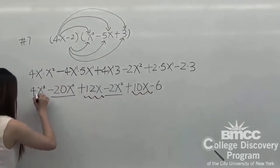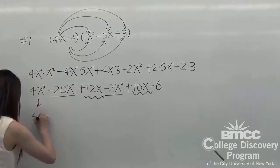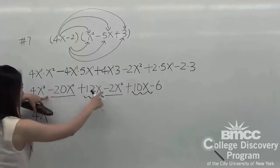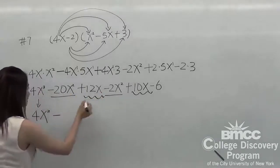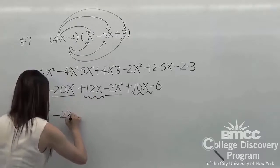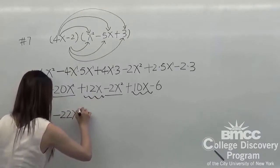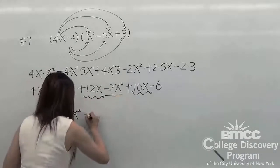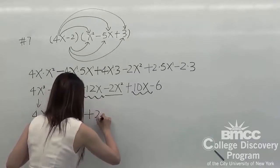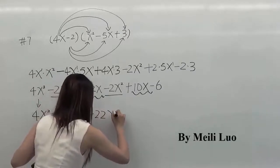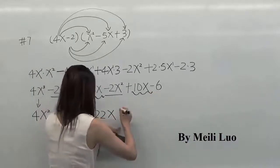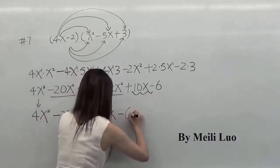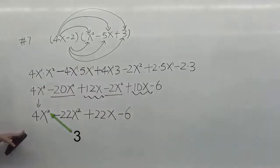So it will be, we keep this the same: 4x cubed minus 22x squared. Combine these two terms: 12 plus 10, they both have the same sign so we keep the same sign. It will be 22x. We just keep the last 6. So this is the answer.